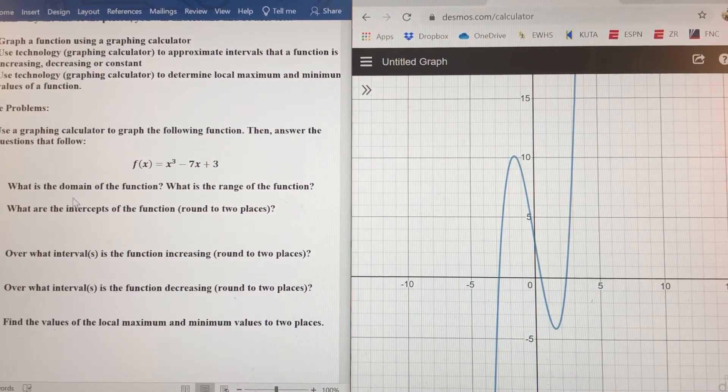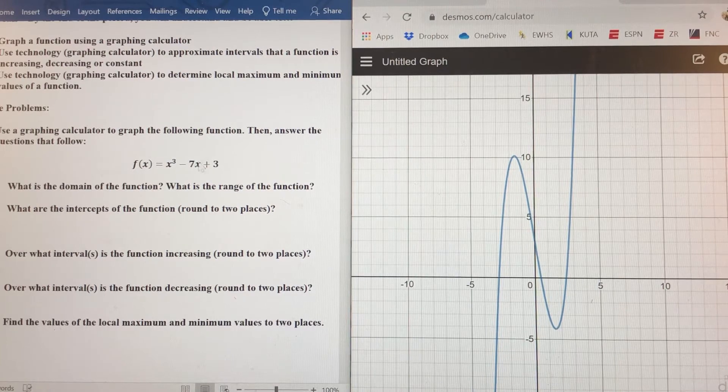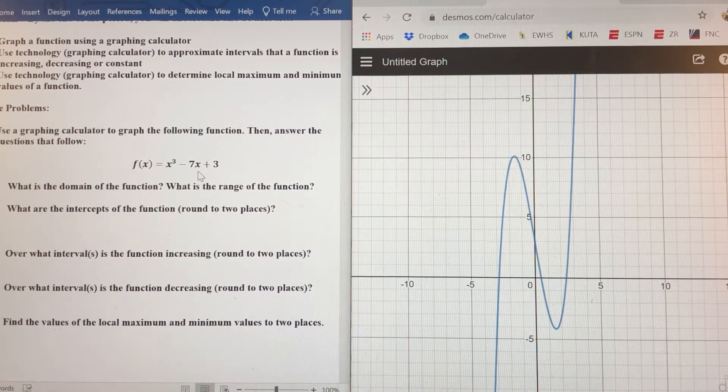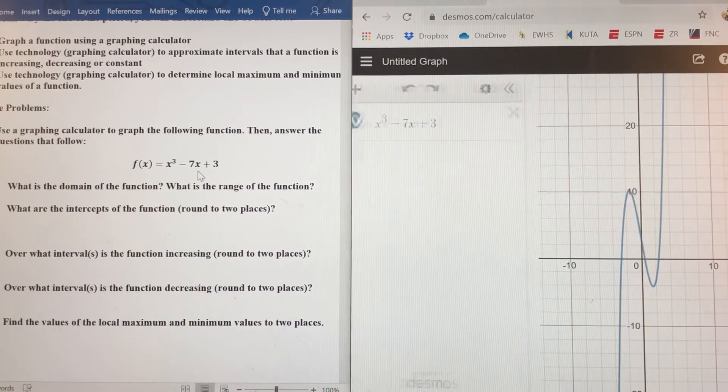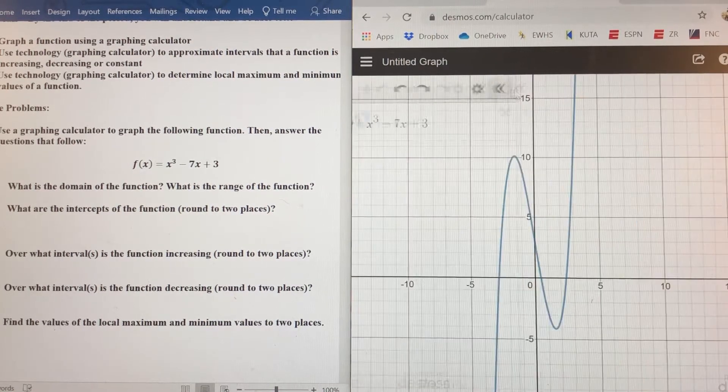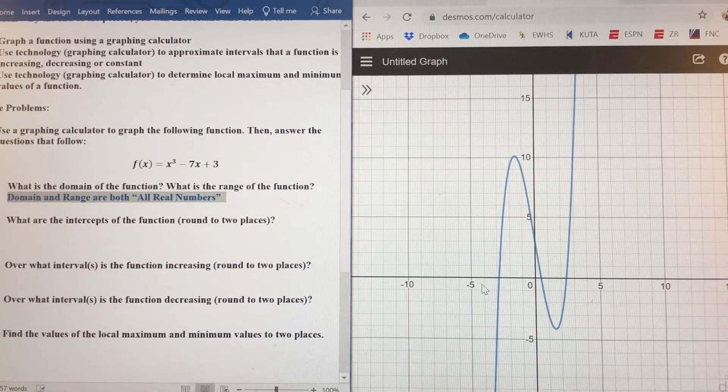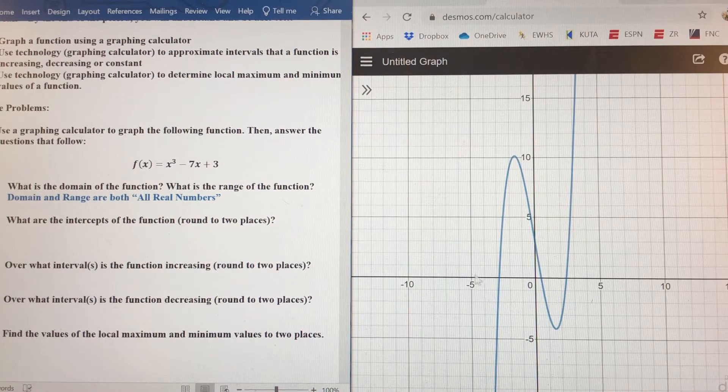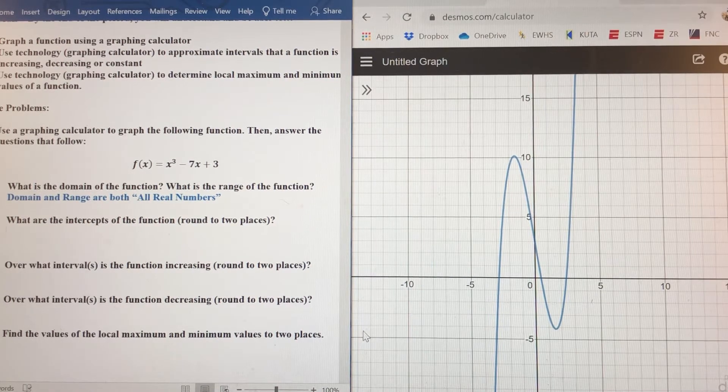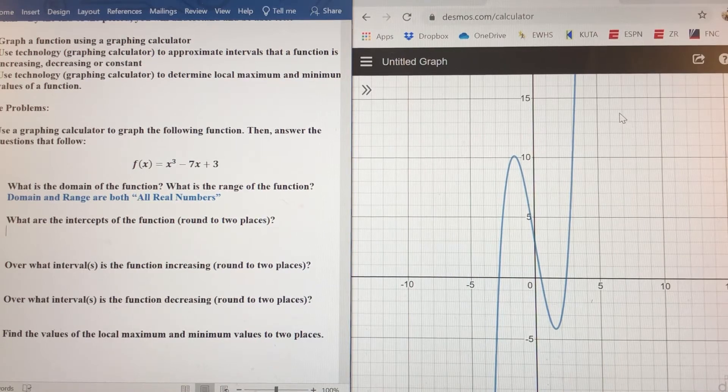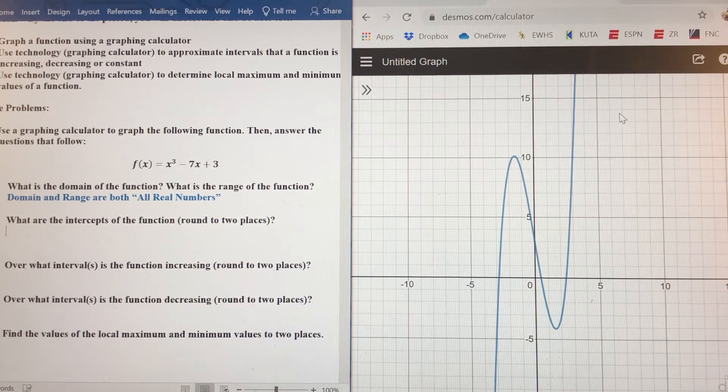But first, let's go ahead and talk about domain and range. You can tell by looking, hopefully, that there is no denominator here. There is no radical expression. So the domain here is going to be all real numbers and the range is too. The graph keeps going forever down into the left. It keeps going forever up into the right. So domain and range are easy to find here.